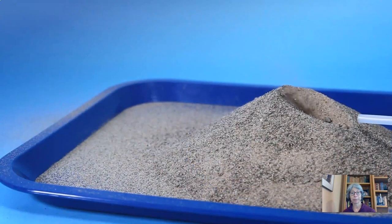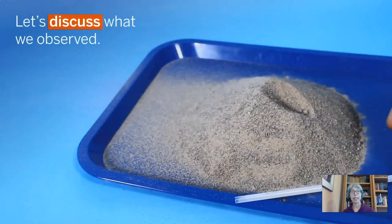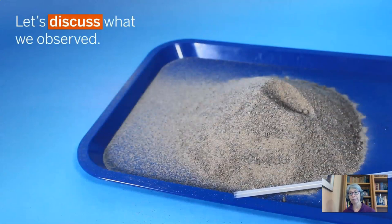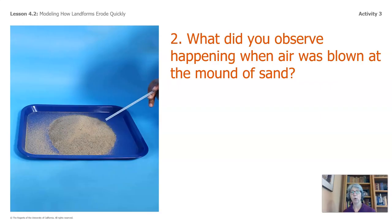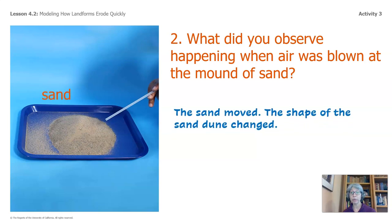It's a close-up. Let's discuss what we observed. What did you observe happening when air was blown at the mound of sand? The sand moved. The shape of the sand dune changed. It even had a little divot in it — that's like a little hole.